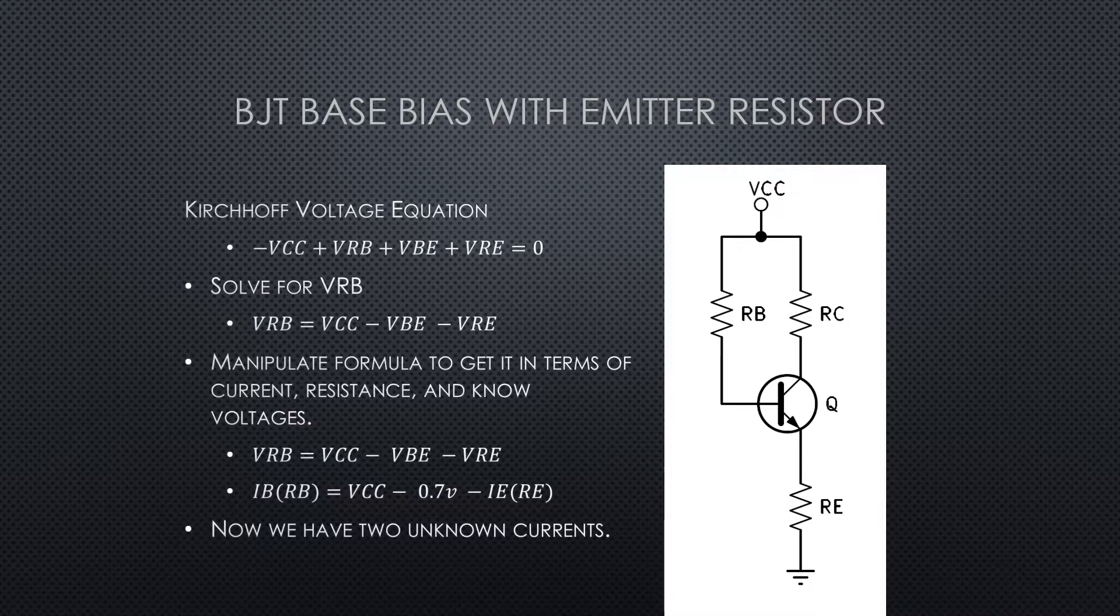We're going to do our Kirchhoff loop equation. We'll write a closed loop, and Kirchhoff's voltage law says that any closed loop should add up and equal zero. So we've got minus VCC plus VRB plus VBE plus VRE. All those voltages should add up to zero.